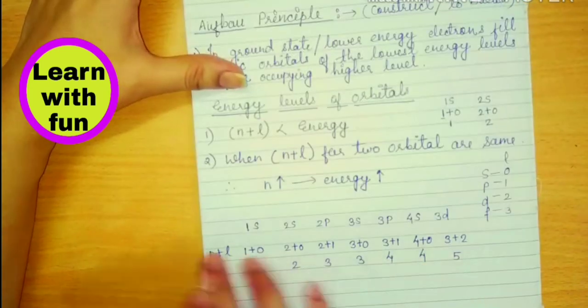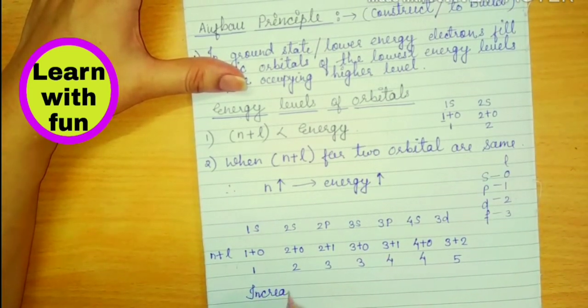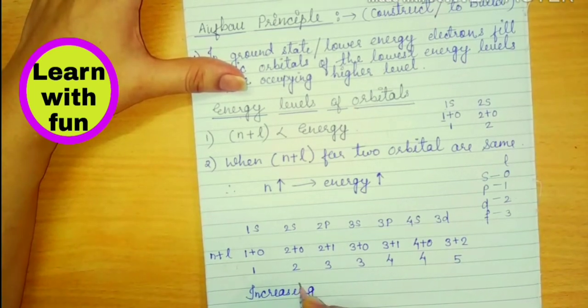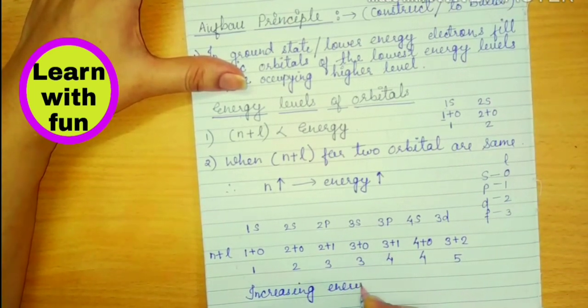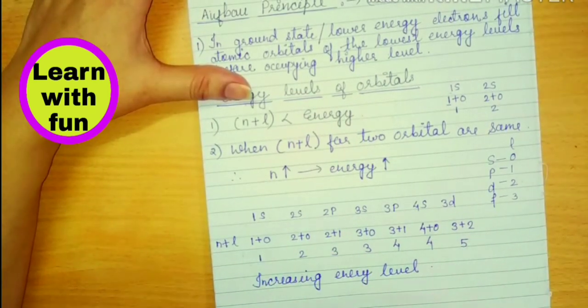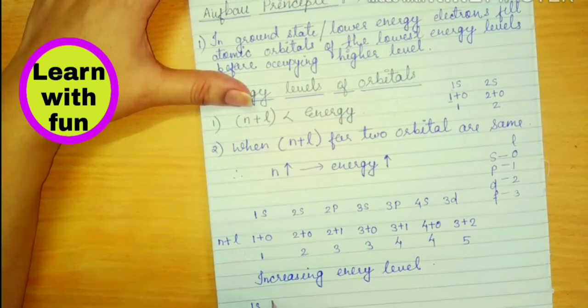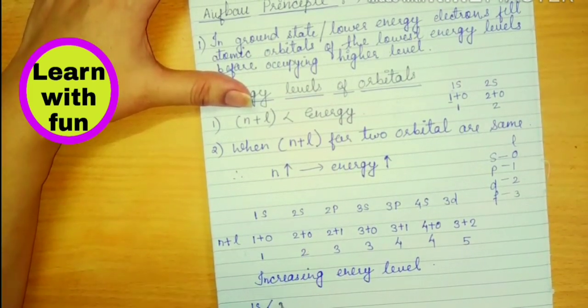Let's arrange these orbitals in increasing energy level. So which orbital has the lowest energy? The one with value 1. So we write 1 first. After that, 2 will come.